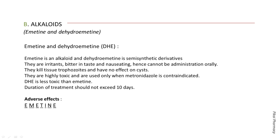Emetine has a long list of adverse effects, but we can use the word EMETINE itself as a mnemonic: E stands for emesis, M for muscle weakness and stiffness, E for ECG changes, T for tachycardia, hypertension, and arrhythmia — grouped together as cardiovascular effects — I for itching and skin rash, N for nausea, and the last E for eczematous lesions.